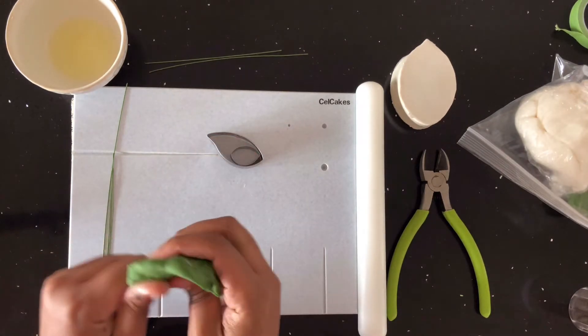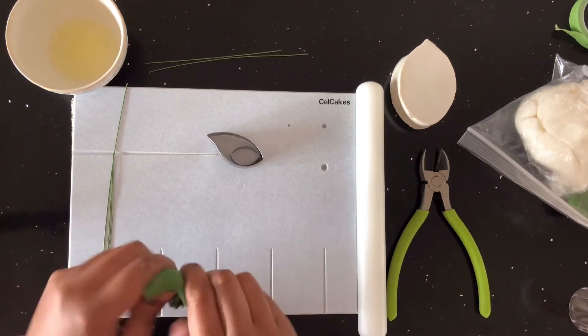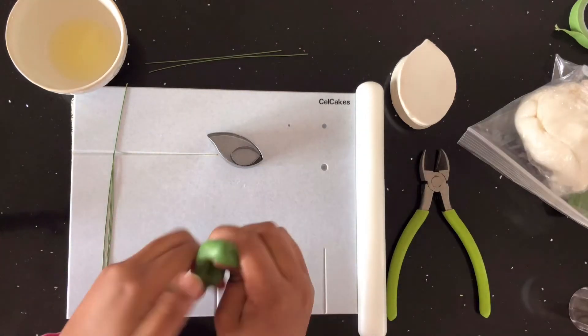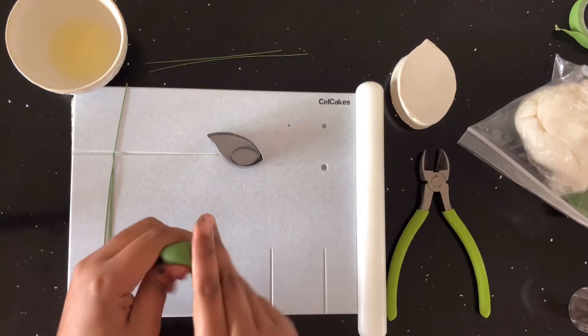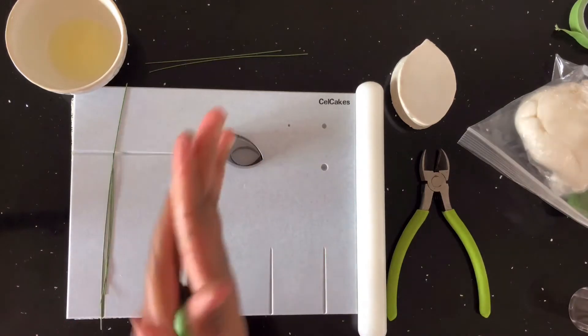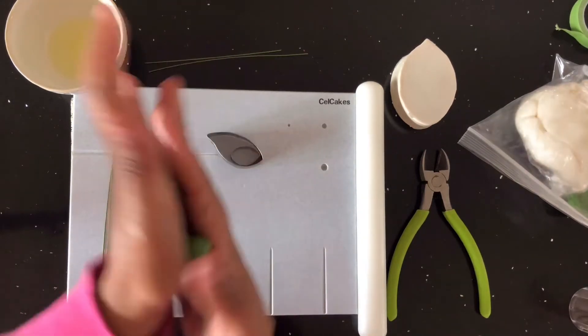This is so important. You're going to want to knead and condition your gum paste so that it's nice and moisturized so that when you go to roll out your leaves, they don't dry or crack when you're working with them.